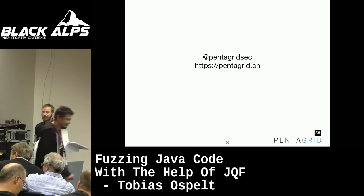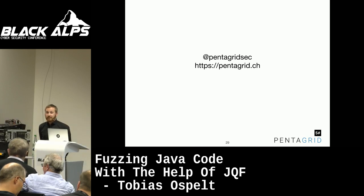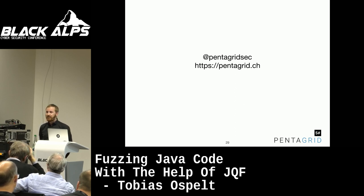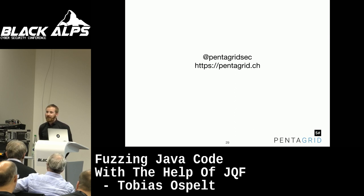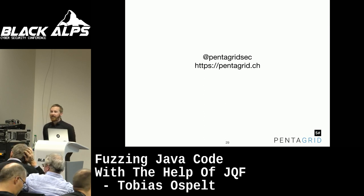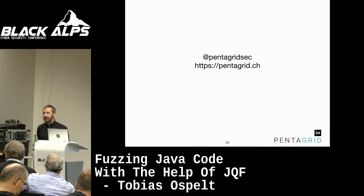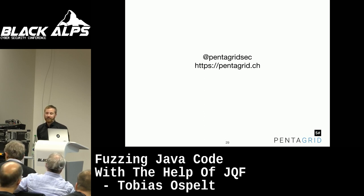Question: is the input generation of the fuzzer deterministic or different every run? Answer: AFL++ now has a seed command-line option so you can say 'always start with this seed,' making it deterministic. Whether it's 100% deterministic you should ask the maintainers, but there should be something similar for JQF. You can basically change it to use a seed for the random generation — it should be fairly easy to make it deterministic.